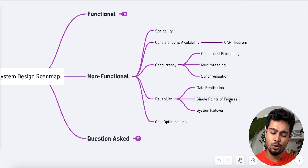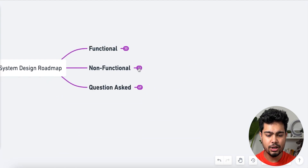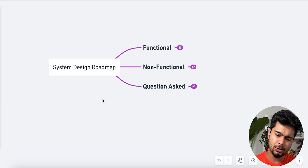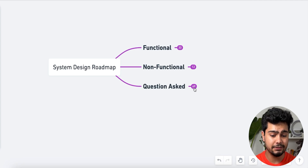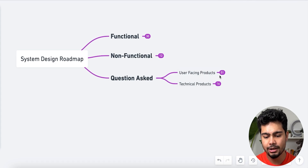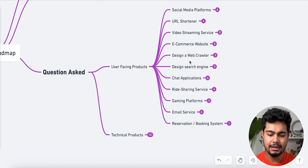Non-functional topics also include data replication, single point of failure (SPF), system failures, and cost optimization. Cost optimization questions are asked frequently in interviews. There are generally two types of questions: user-facing products and technical products.